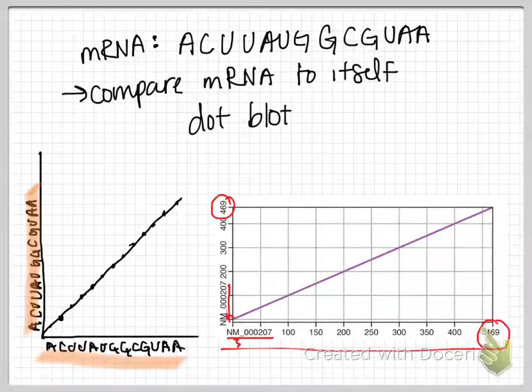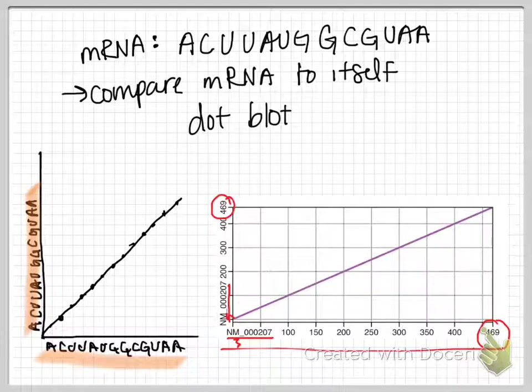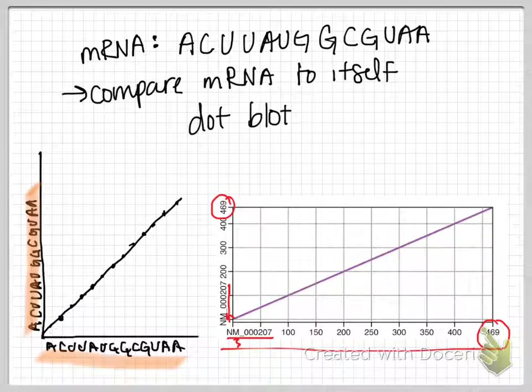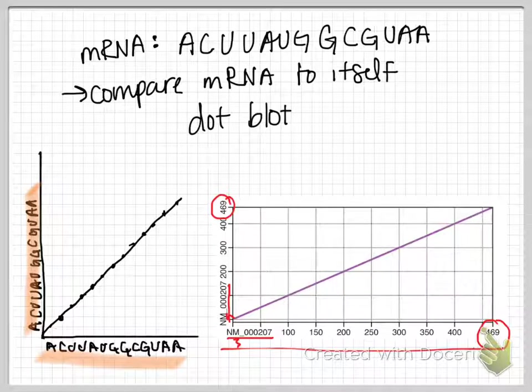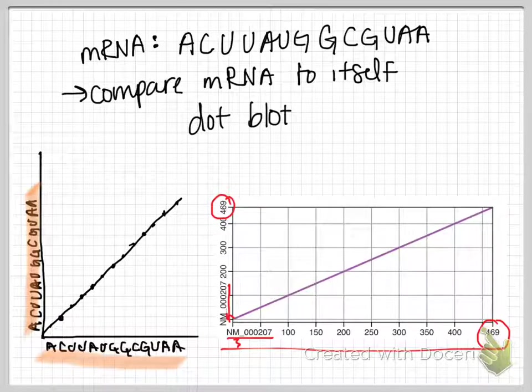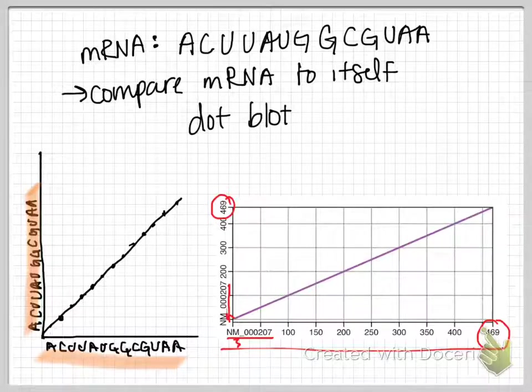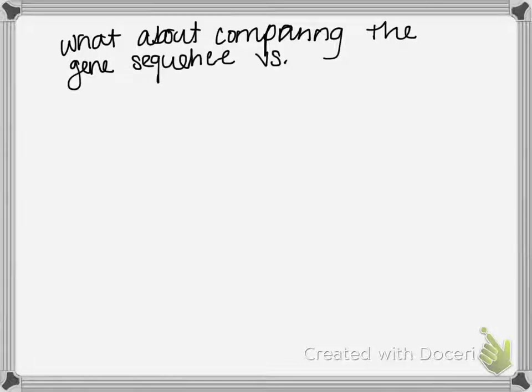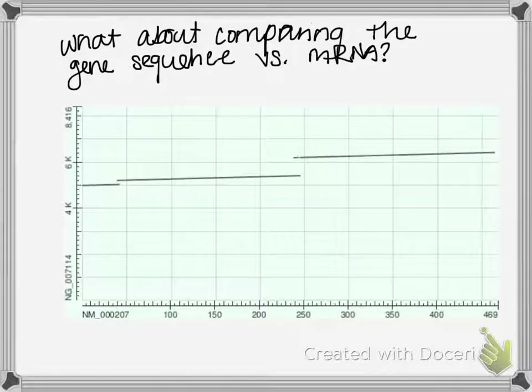Now we can get a feeling so that we know, okay, if two things are exactly the same, we expect to see a diagonal line. Well, what happens when we compare a eukaryotic mRNA sequence to the genomic DNA sequence for that same sequence? This can tell us some patterns about how these sequences relate to each other.